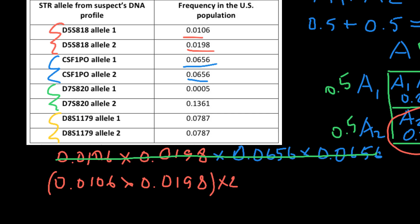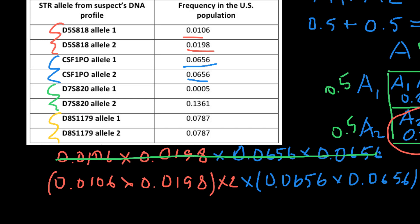For the second locus, we have two alleles that are homozygous — as you can see, homozygous. So let's add to our calculations: we have to multiply by the probability of the genotype of the second locus, which is 0.0656 × 0.0656. But here, because the locus is homozygous and the two alleles are identical, we don't have to multiply by 2, as we did in the first example.